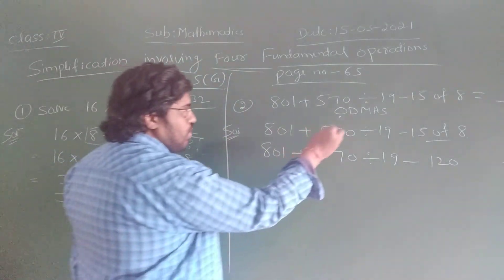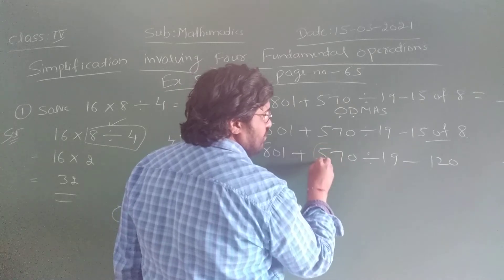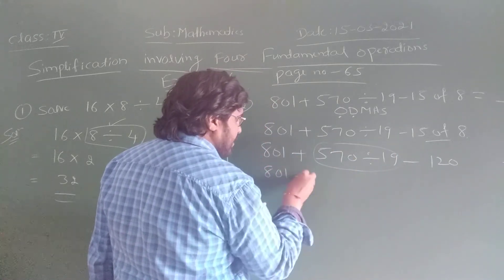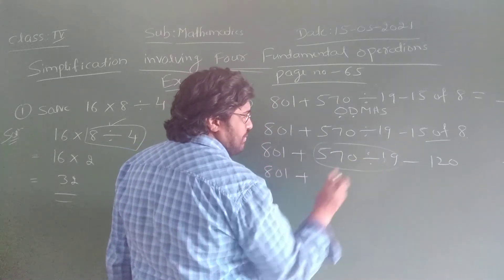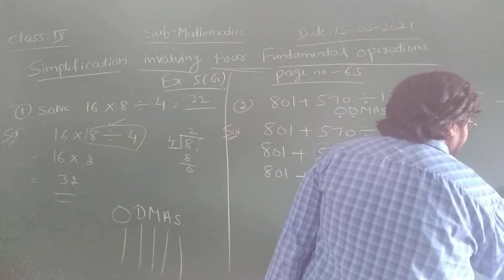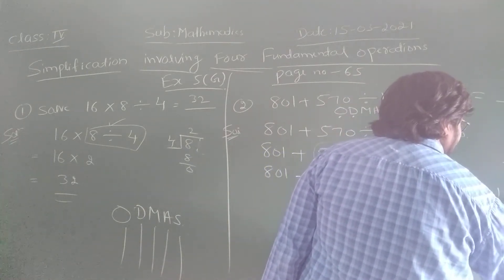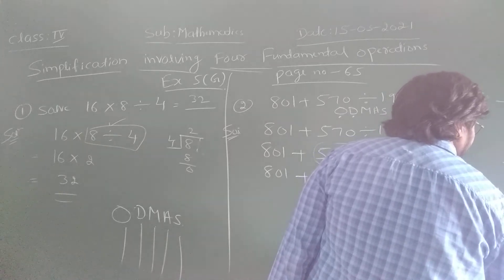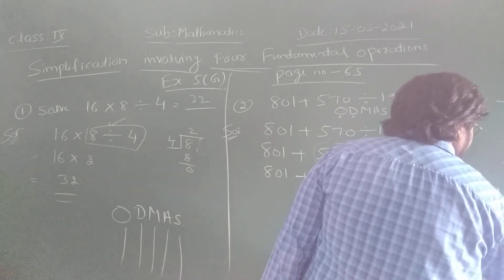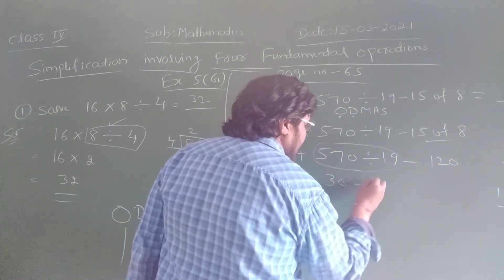After off, what is next? Division. So I am going to divide these two: 570 by 19. 19 times 30 is 570. What answer did I get? 30.